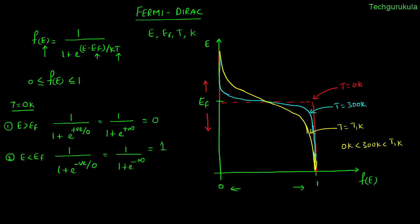Now let us see what happens to the Fermi-Dirac distribution as temperature increases. Taking an energy level E1 just above the Fermi energy level: at T = 0 K the probability of finding an electron is 0; at T = 300 K it is some finite value P1; and at T = T1 K it is P2, where 0 < P1 < P2. As temperature increases, the probability of finding an electron above the Fermi energy level increases.